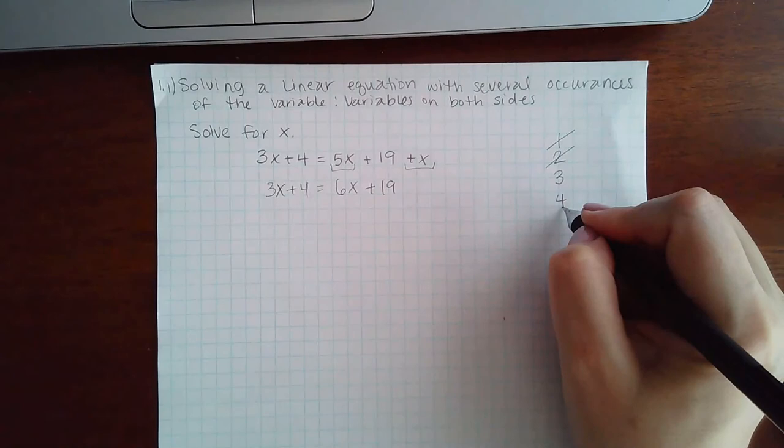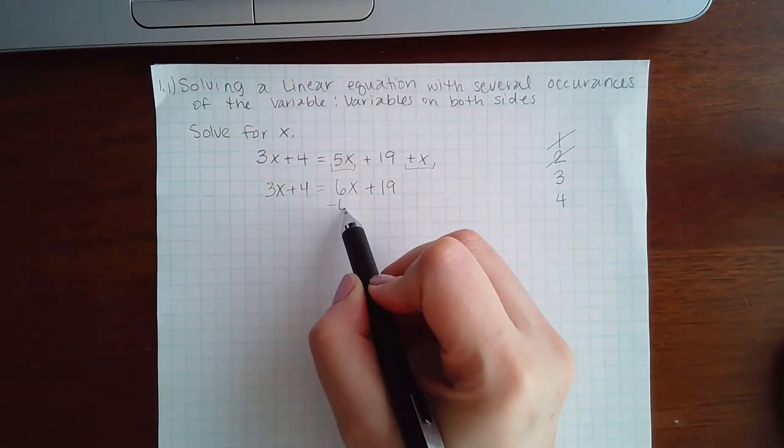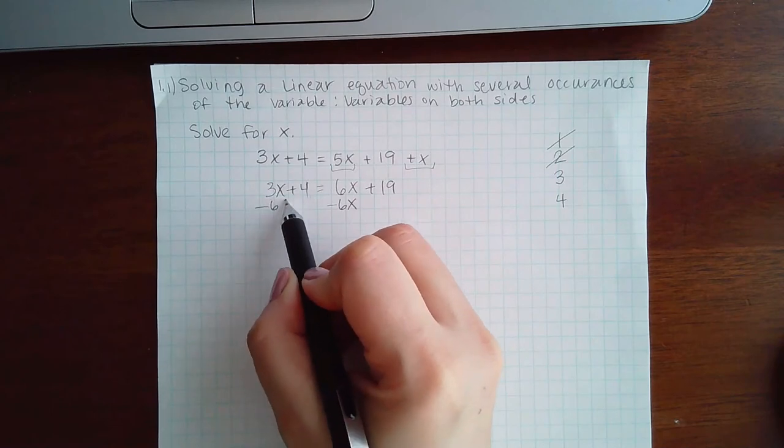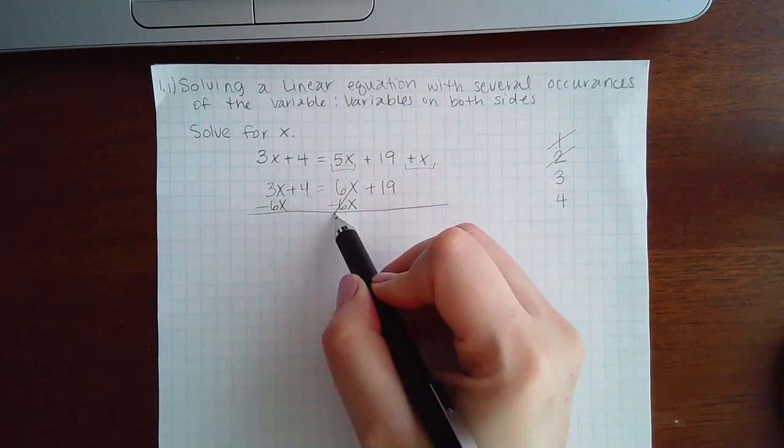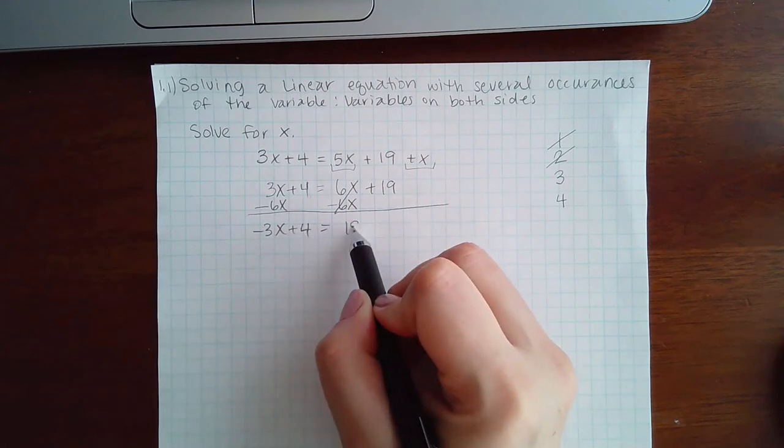Then step four is to move the variable terms to one side. So since this is a positive 6x, we're going to use minus 6x to move it. And I get negative 3x plus 4 equals positive 19.